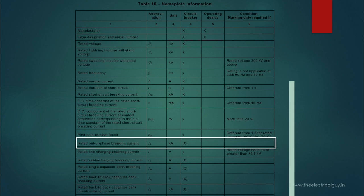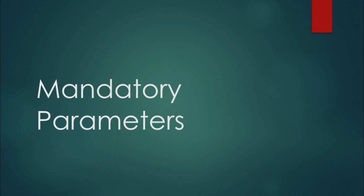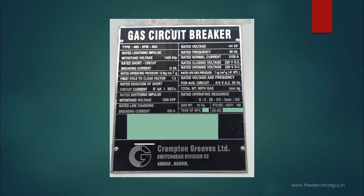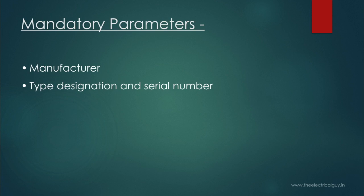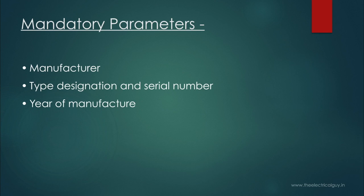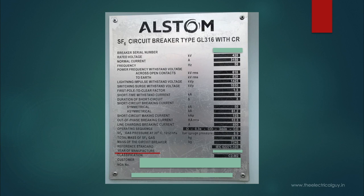We will first look at mandatory parameters, then condition-based, then optional ones. The first is the manufacturer — the name of the manufacturer. Then type designation and serial number — the type of circuit breaker and its serial number. Then year of manufacture — the year in which the breaker is manufactured.